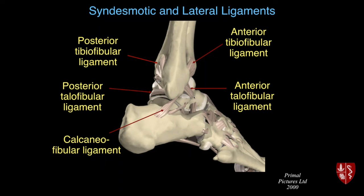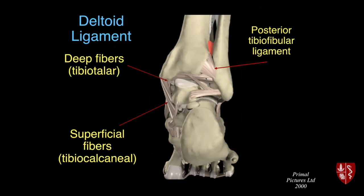The true ankle ligaments are lower down and go between the fibula and the foot bones. The most important one is the ATF — the anterior talofibular ligament. Remember that ligaments are named according to their attachment sites, so they go from fibula to talus. The ATF is the most commonly torn ankle ligament, for example if you step off a curb — that's a good one to know about when looking at MRI scans.